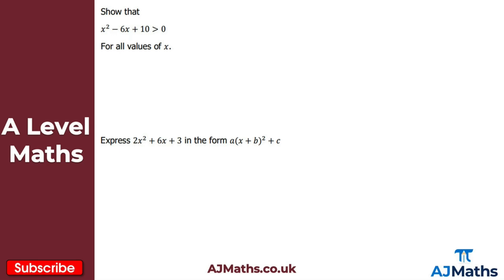Hopefully you've gotten on okay with these two practice questions. Let's take a look at what you should have got. They follow the same pattern as the worked examples. For the first one, we need to show that the quadratic is strictly greater than zero, so we complete the square: (x minus 3)² minus 9 plus 10. Cleaning this up gives (x minus 3)² plus 1.